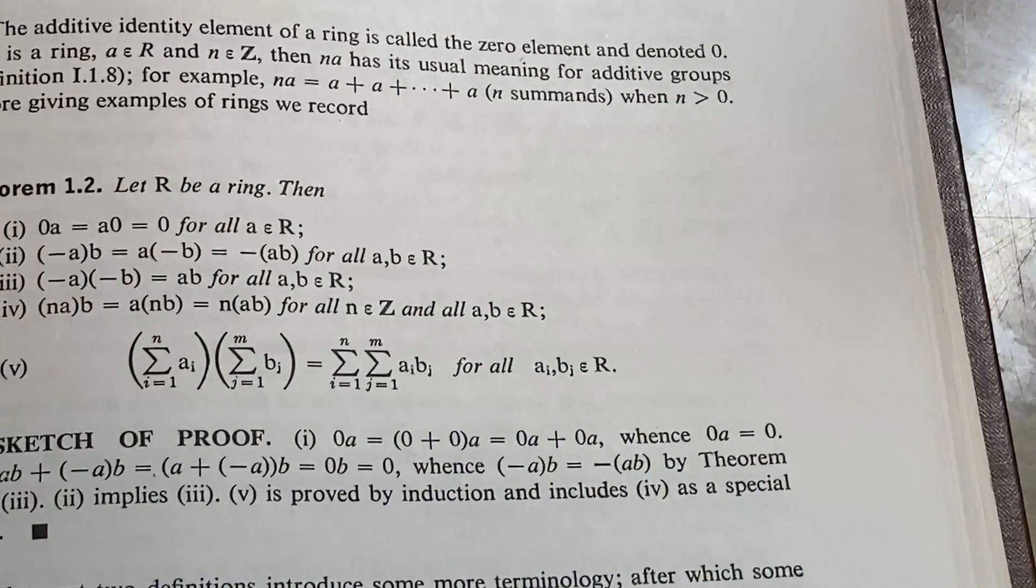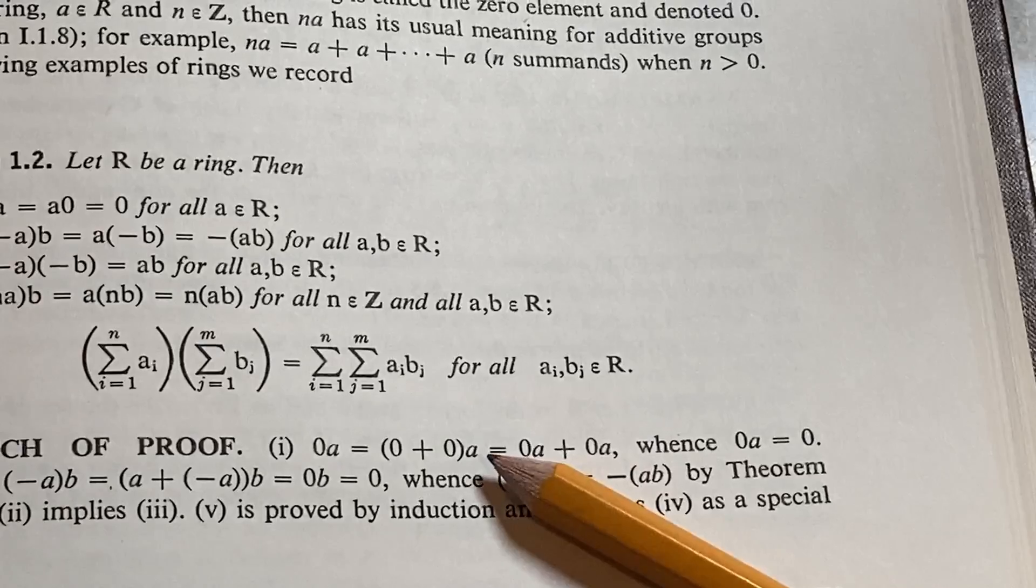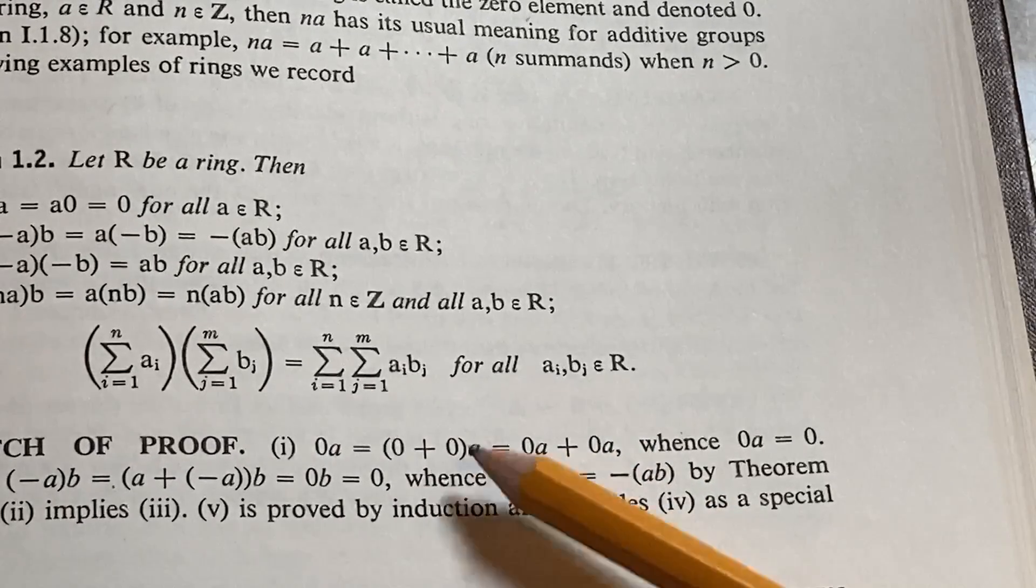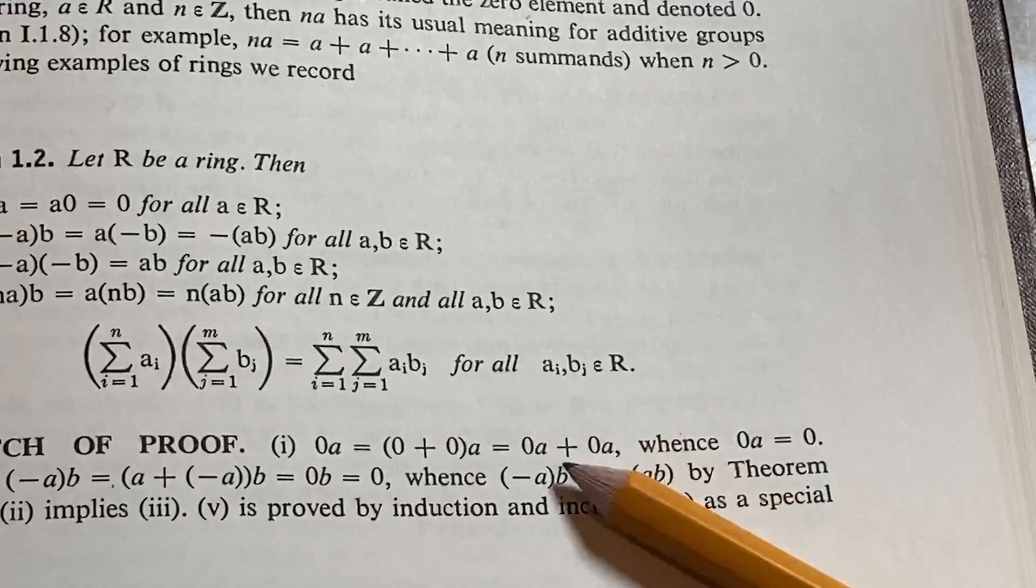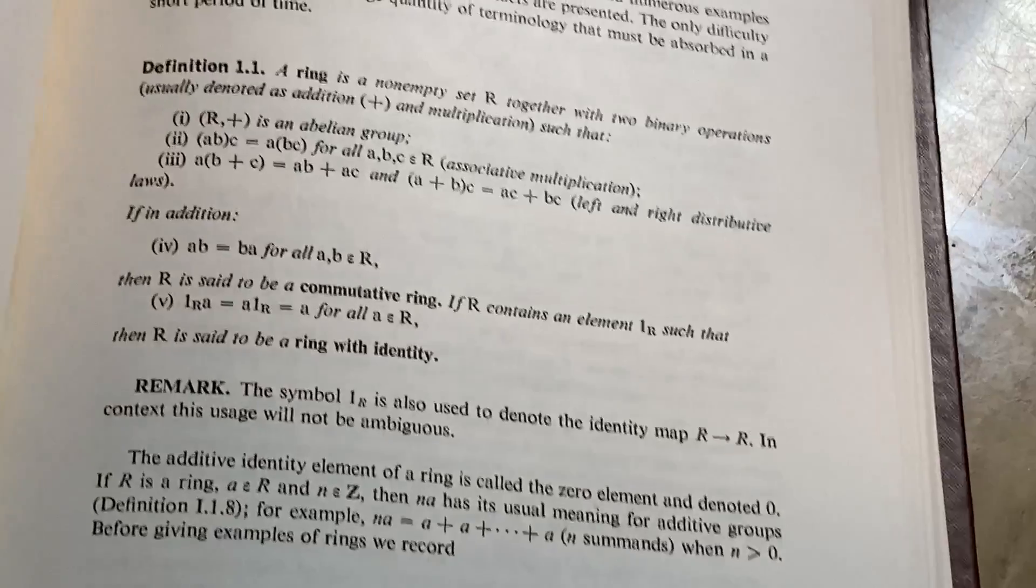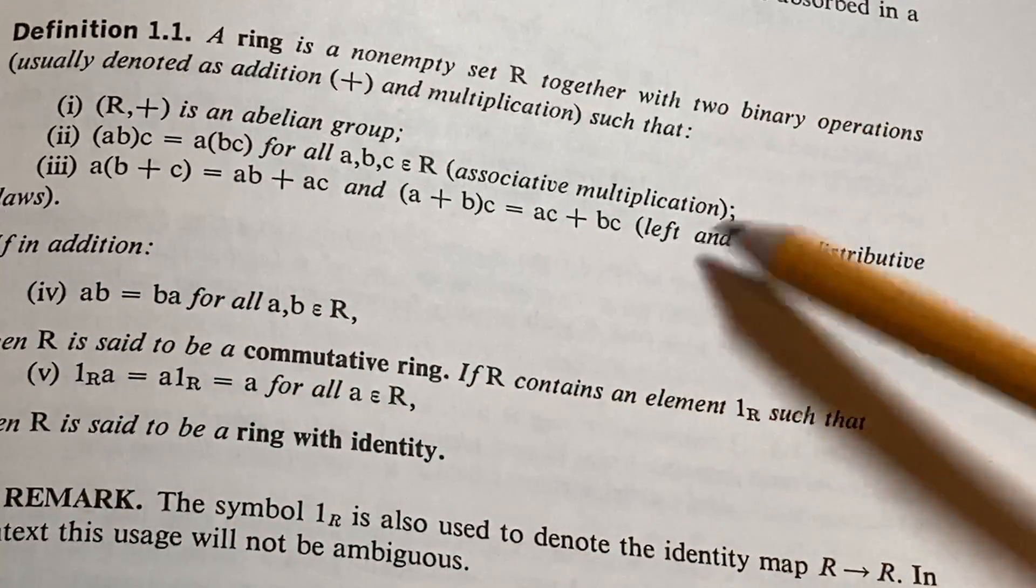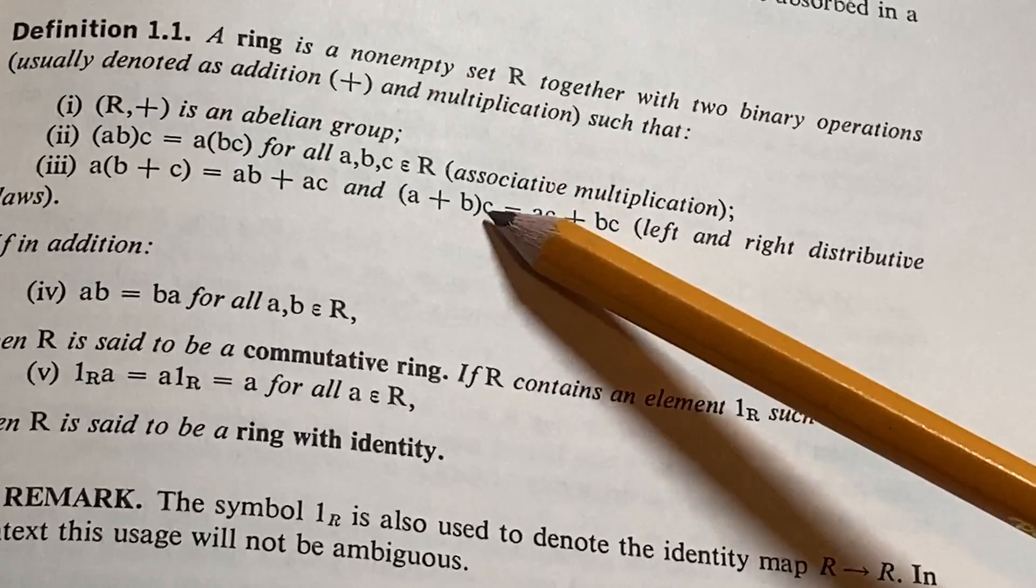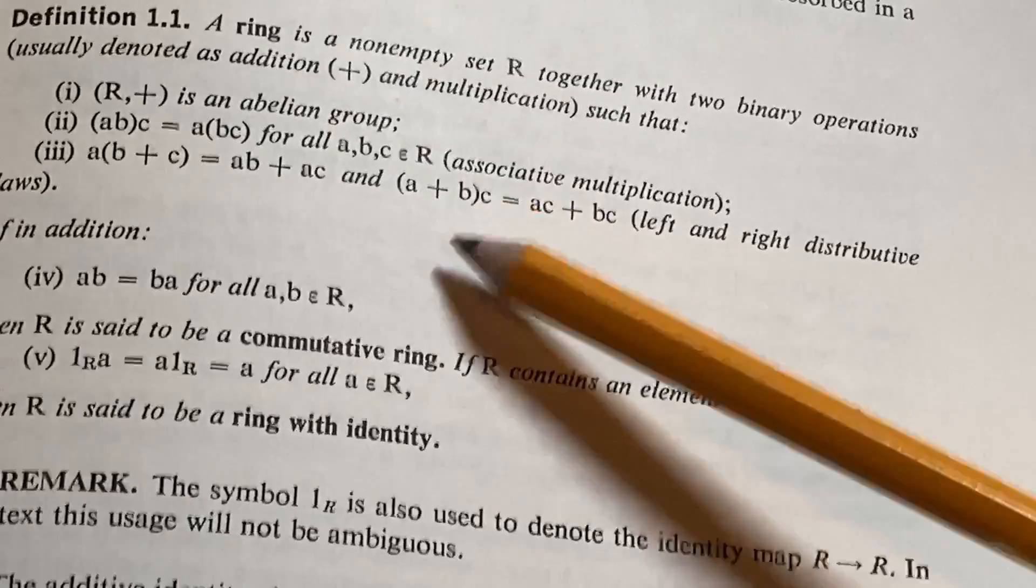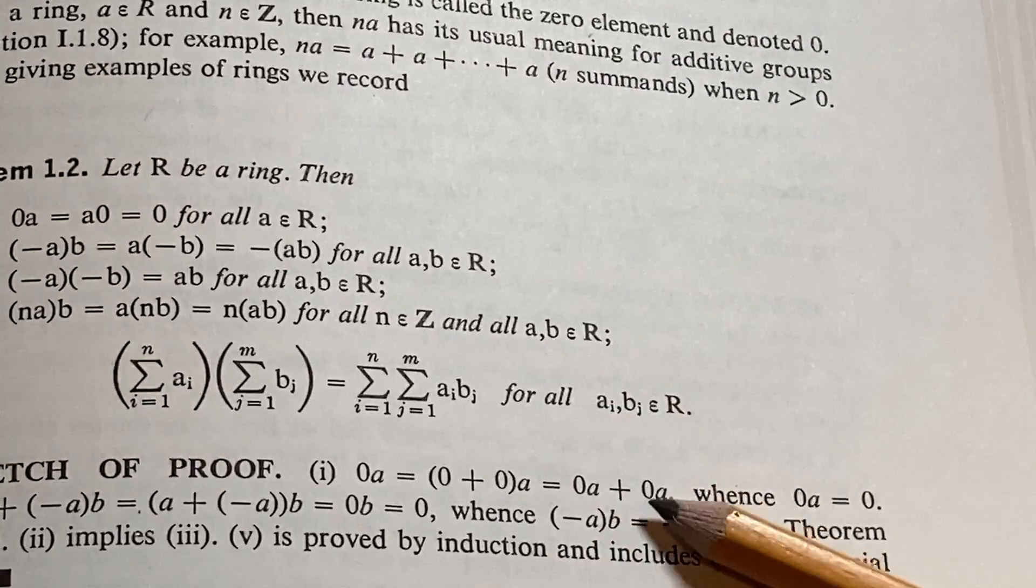And then to go from here to the next step, what's happening is we're distributing from the right. You see how the a is being distributed: a times 0 plus a times 0. So the a is on the right. That, my friends, would be condition three where he says left and right. So it would be this one here. Right, that would be your a and these would be zeros.